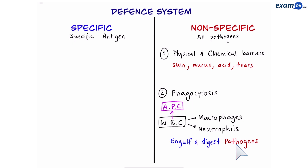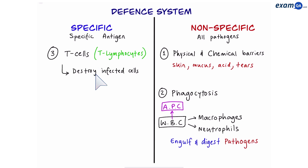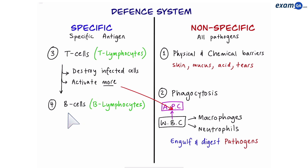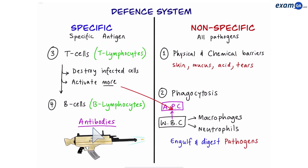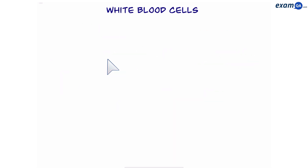The APC is now going to trigger the activation of T cells. T cells will destroy infected cells, activate macrophages, and also activate B cells, which will in turn create antibodies to shoot down the pathogens. In this video, we're going to focus on step three: T lymphocytes. But before we do that, let's quickly make sure we have a good understanding of the different types of white blood cells.